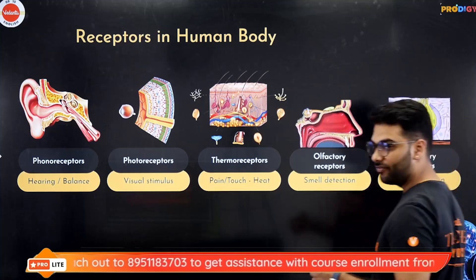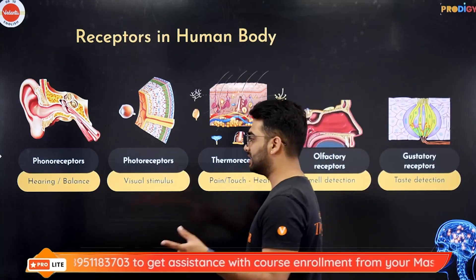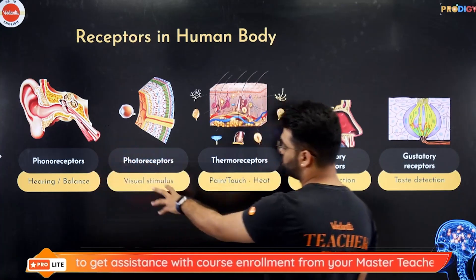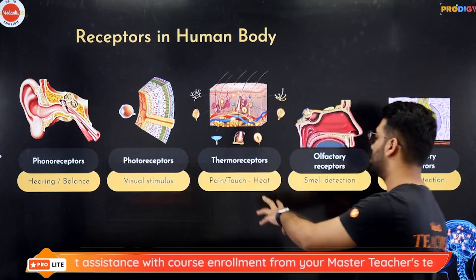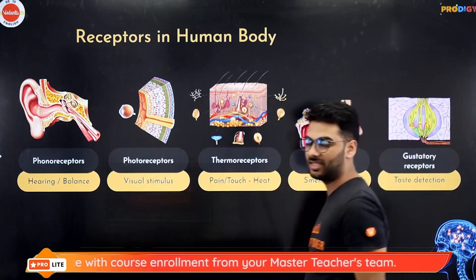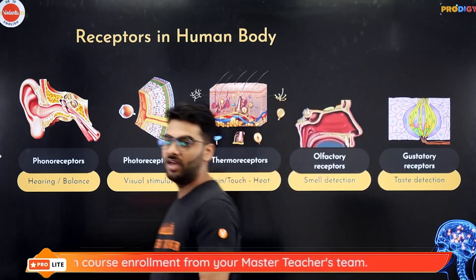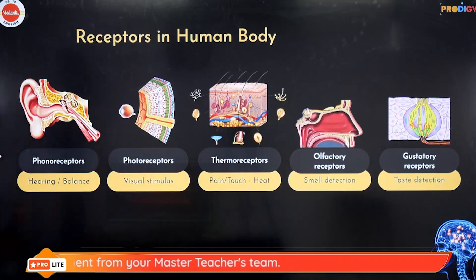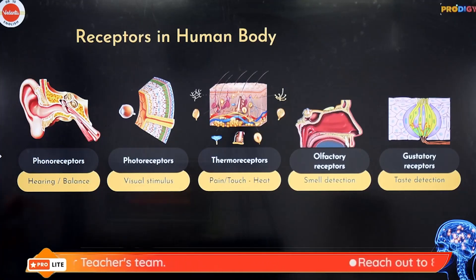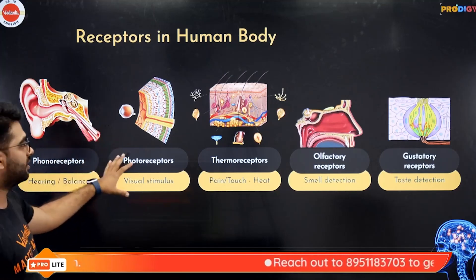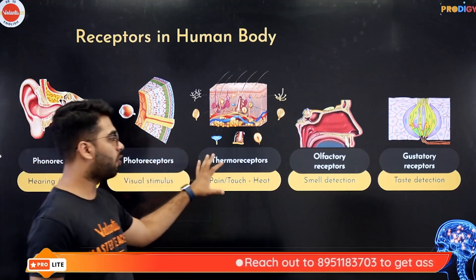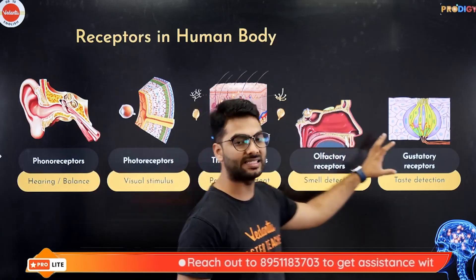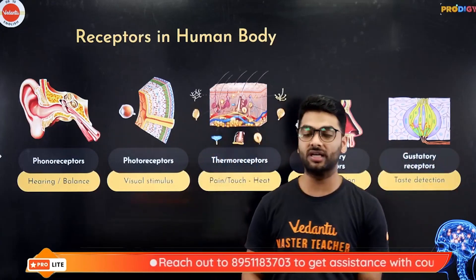You have to memorize these terms: phono receptors, photoreceptors, thermoreceptors, olfactory receptors and gustatory receptors — different receiving cells in different parts of your body. The phono receptors are in your ears, photo in the eyes, thermo on the skin, olfactory in the nose and gustatory on the tongue.